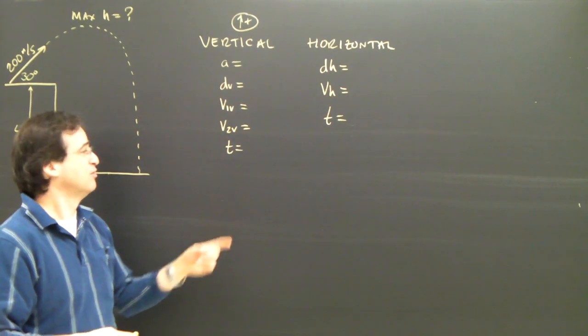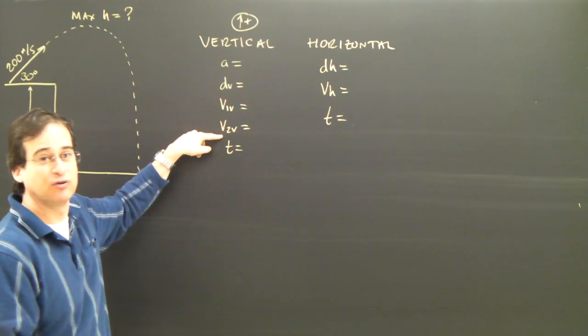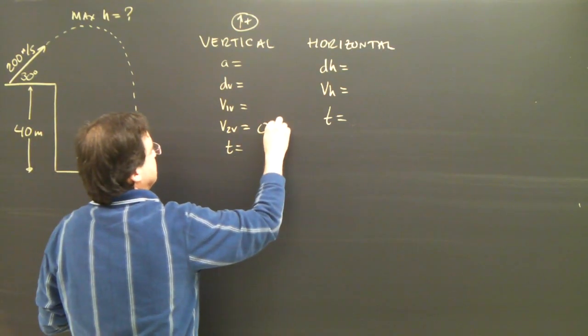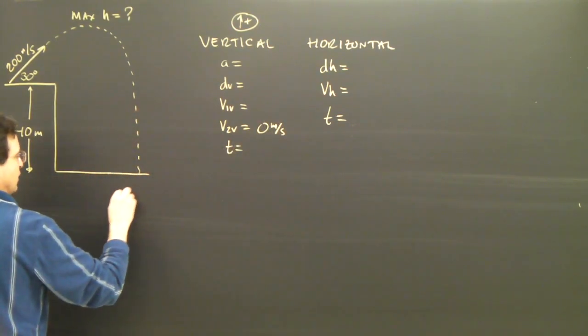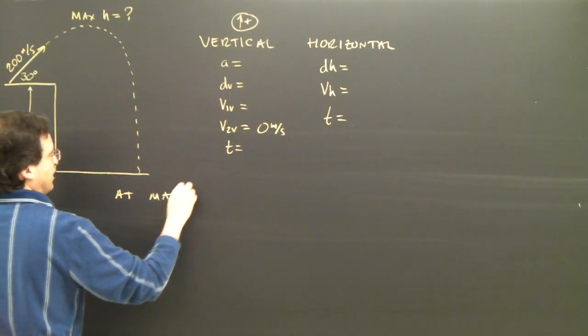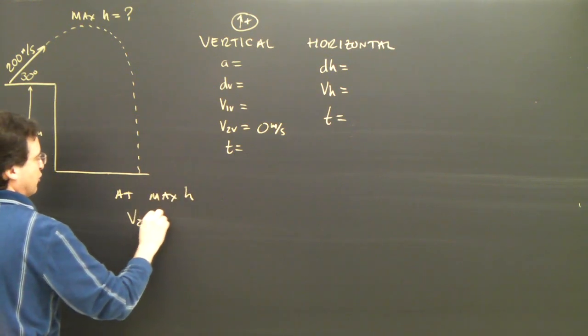So at the maximum height, the vertical velocity, v2 vertical, the final is zero. At maximum h, v2 vertical equals zero.